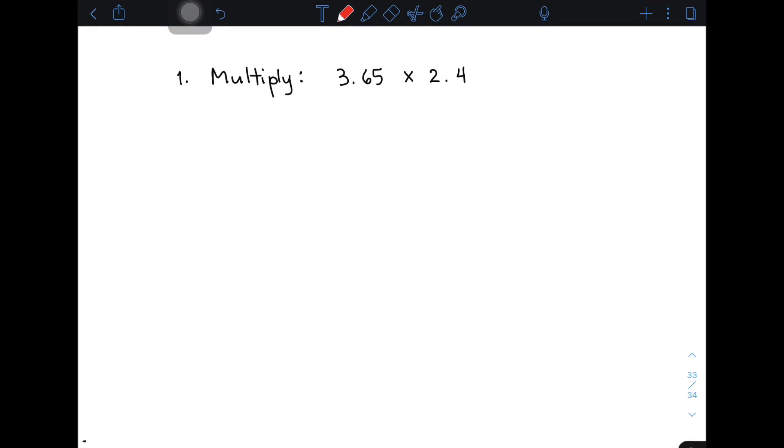I have here example number one, multiply 3.65 by 2.4. How we're going to do this is arrange the given decimals in vertical form. So we have 3.65 times 2.4. By the way, in multiplying decimals, you don't need to align the decimal point.